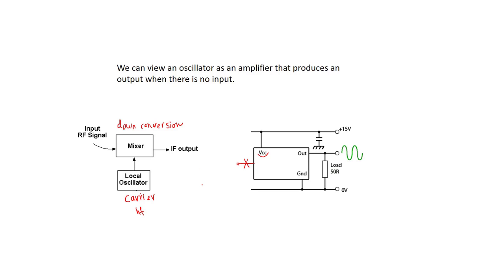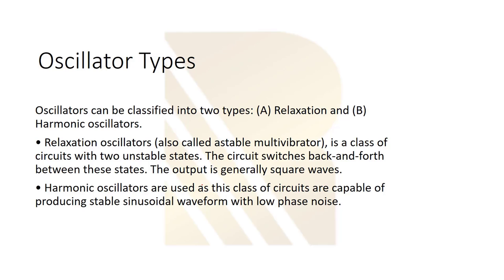We have two oscillator types: relaxation and harmonic oscillators. The relaxation oscillator is a class of circuits with two unstable states. The circuit switches back and forth between these states. The output is generally a square wave, which is not the case we are talking about now.